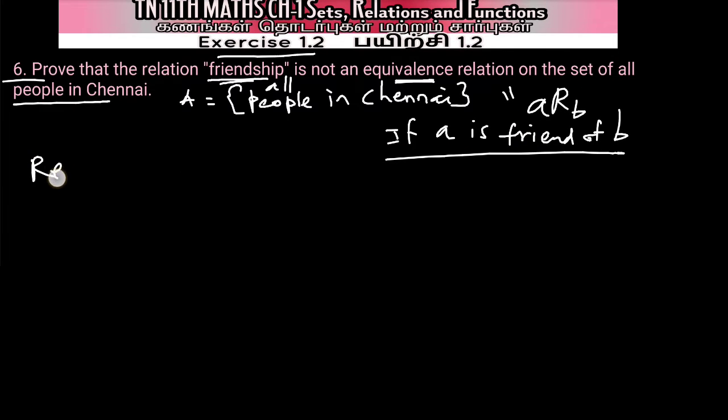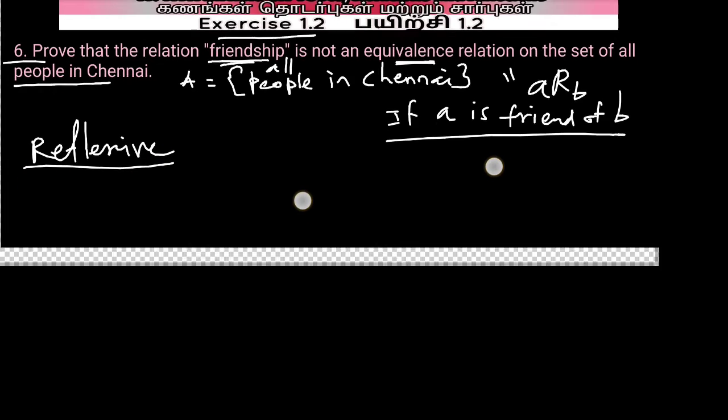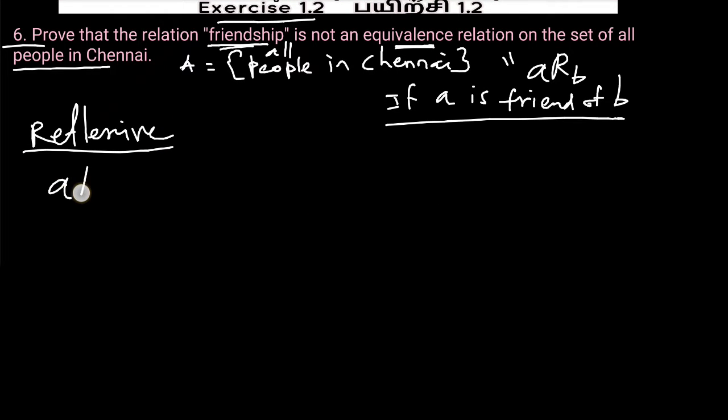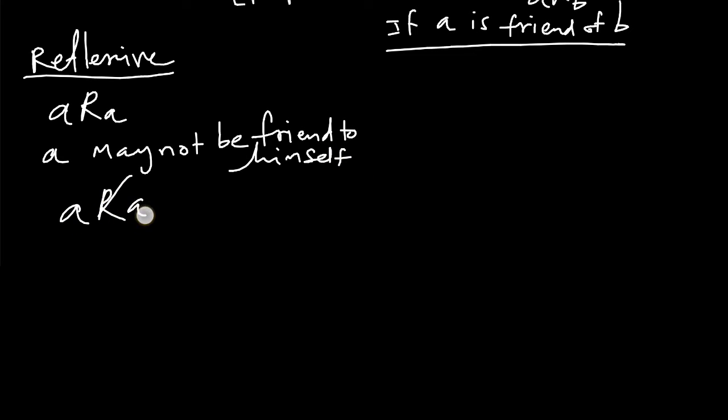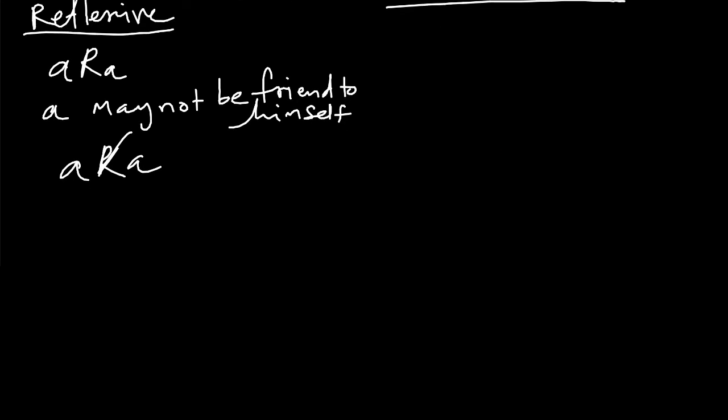Reflexive means A related to A should be true. If you're taking a person, is he a friend to himself or not? A may not be friend to himself. So A related to A is not true. Therefore, it is not reflexive.